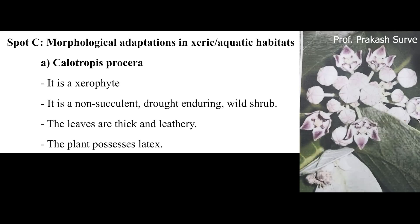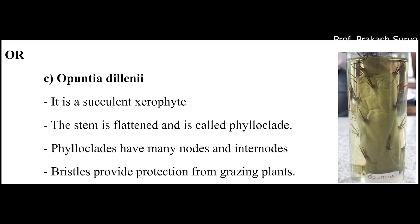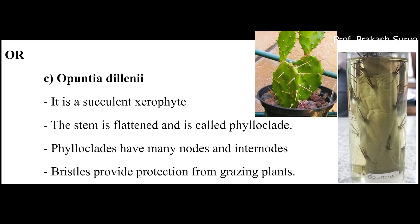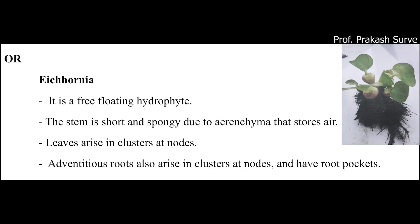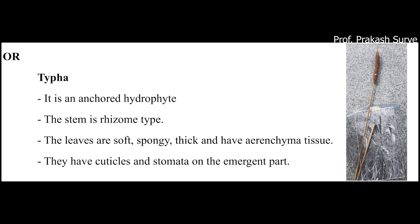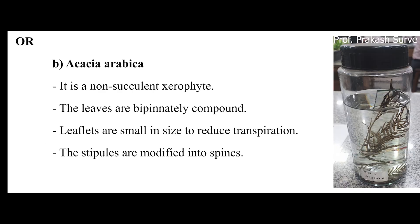Next is spot C, about adaptation in xeric or aquatic plants. First plant may be a Calotropis plant or an Opuntia plant. Second may be a Hydrilla plant. Third may be an Eichornia plant. Same here, either a preserved specimen or photograph will be kept. Next may be a Typha plant or maybe an Acacia plant.